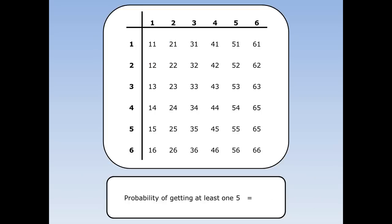What's the probability of getting at least one five when I throw two dice? Here are all the combinations when I get at least one five, including the double five. There are 11 of them altogether out of 36 things that could happen. The chance is 11 out of 36.